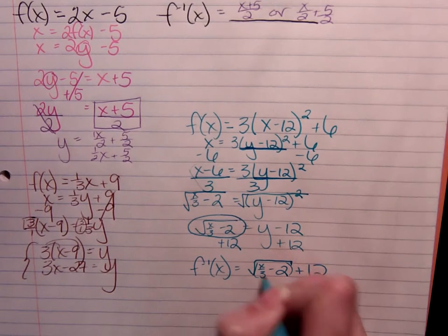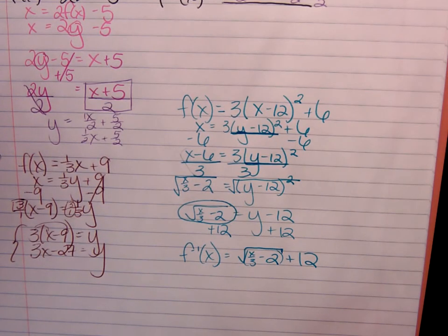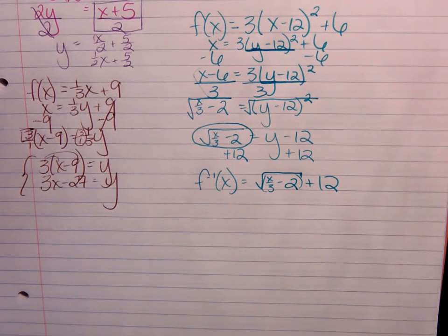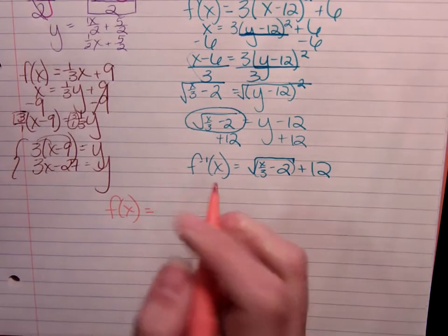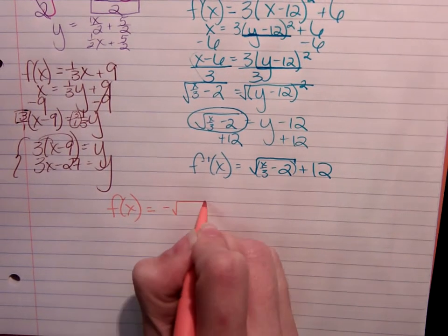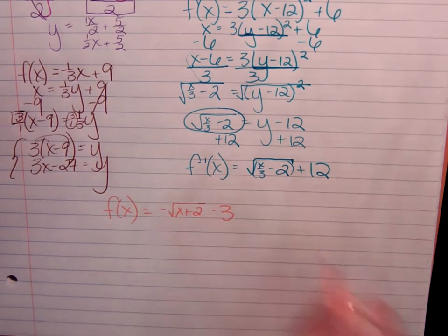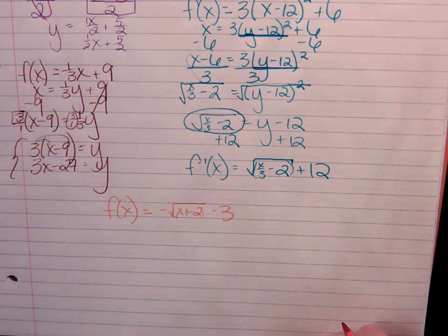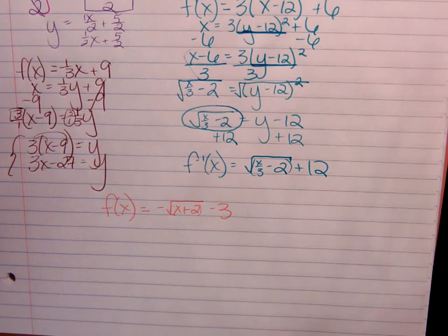Sometimes you'll see these in parentheses. Sometimes they won't be. They're optional. It doesn't matter. Okay. Last example. We'll go back the other way. We're going to start with a radical function. F of x is equal to negative square root of x plus 2 minus 3. Again, sometimes you'll see this in parentheses. Sometimes you won't. If it's going to confuse you, make sure you always go back and add them in there. But this minus 3 is not under the radical, and that's important.